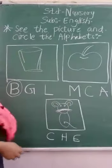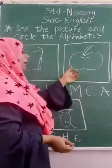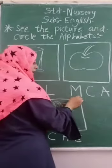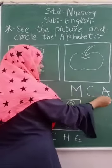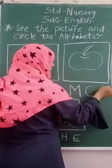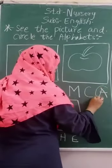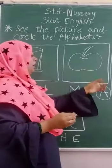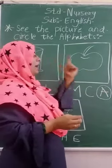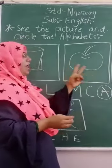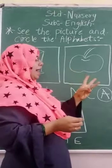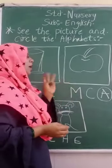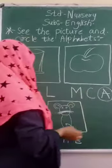Which picture is this? Apple. Apple comes from A. Is this A? No. Is this A? No. This one is A? Yes. You have to circle A. A for Apple, A for Aeroplane, A for Amp — these all come from Alphabet A.